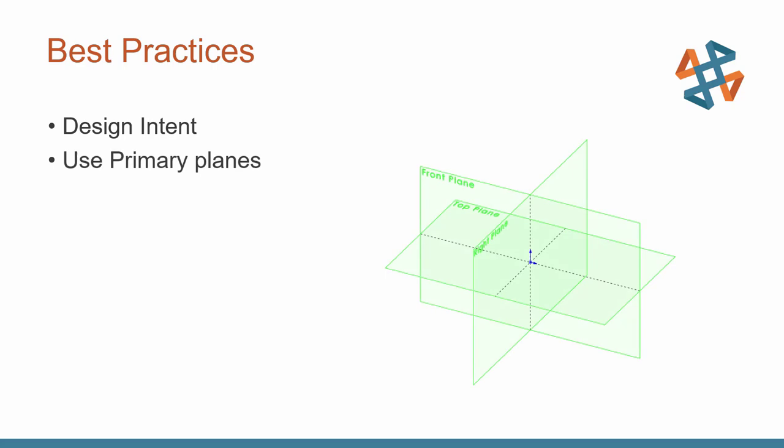The other thing I want to emphasize — and it really goes hand in hand with design intent — is to leverage those primary planes. Dimension off of them, add your relations to them, sketch off of them, build new reference planes from them, and build following geometry off those reference planes. We all know what happens if we add dimensions to an edge of a fillet and then delete those fillets. You get dangling dimensions and relations. If we get in the habit of always using these reference planes, they will never leave the model, giving us a more robust sketch and design intent.